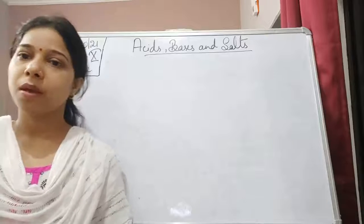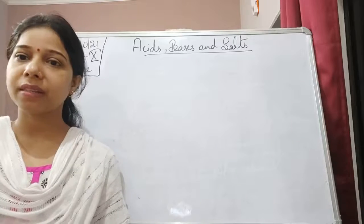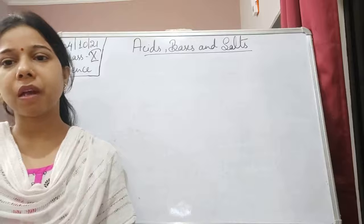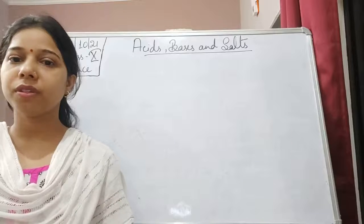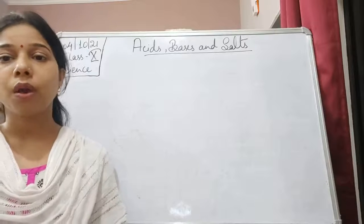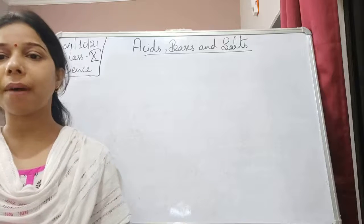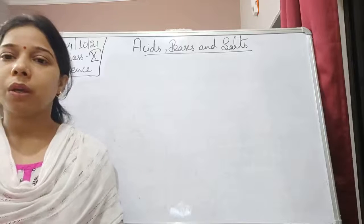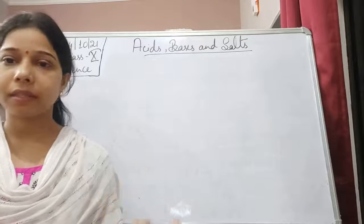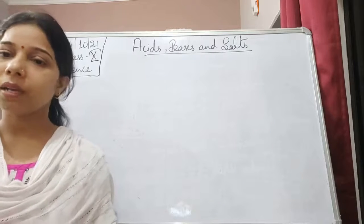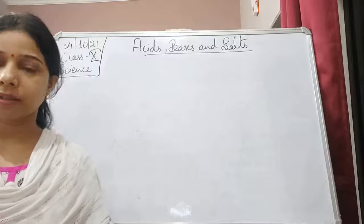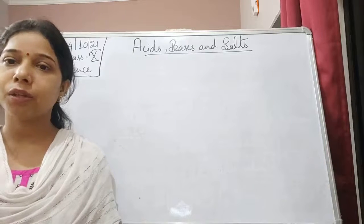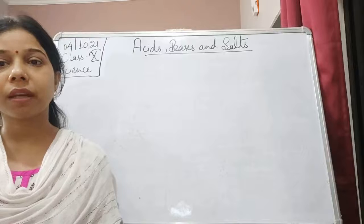Hello students, welcome back to your science class. In the previous class in this chapter, that is acids, bases and salts, we were talking about the properties. We had seen what are indicators, as well as we understood what are acids. Acids are basically classified into concentrated and dilute.